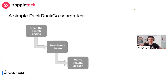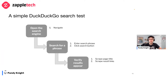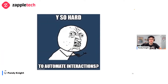Here's an example of a simple DuckDuckGo search test. DuckDuckGo, if you're not familiar with it, is a search engine like Google or Yahoo. The steps are straightforward: opening the search engine requires navigation; searching for a phrase requires entering keystrokes and clicking the search button; verifying results requires scraping the page title and result links from the new page. As you can see, interactions are just everywhere. Unfortunately, our industry struggles to handle automated web UI interactions well.